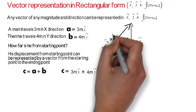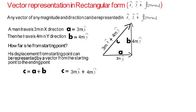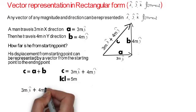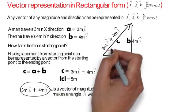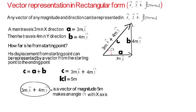The vector c = 3m î + 4m ĵ has both a direction and a magnitude. The magnitude of c is easy to find using the Pythagorean theorem, and it equals 5 meters. This vector makes an angle alpha with the x-axis. From plane geometry, tan(α) = 4/3, and thus we know the value of alpha.